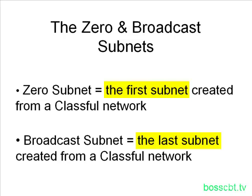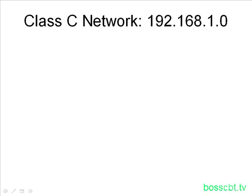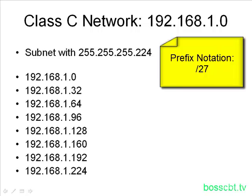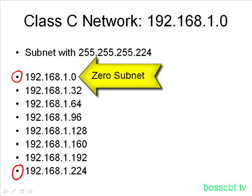Let's take a look at some of the problems introduced by the zero and the broadcast subnet, and then what's been done to address that. Let's take this Class C network, 192.168.1.0, and apply a subnet mask. We'll subnet this classful network and apply the mask .224, which is a slash 27. These are all of the subnets we can create from this one classful network. The zero subnet is the first one, and the broadcast subnet is the last one.